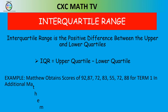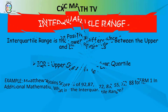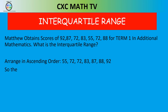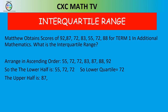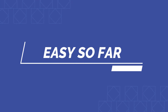The upper quartile is the median of the upper half of Matthew's scores, and the lower quartile is the median of the lower half. Arranging in ascending order: 55, 72, 72, 83, 87, 88, 92. The lower half is 55, 72, 72 — median is 72, so Q₁ = 72. The upper half is 87, 88, 92 — median is 88, so Q₃ = 88. IQR = 88 − 72 = 16.